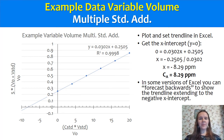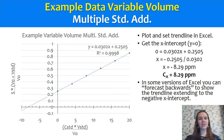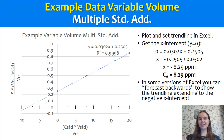So for variable volume standard additions, that x-intercept is the actual analyte concentration in your original 5 mils of sample — 8.29 ppm in this case. It turns out the estimate of 10 ppm was not too bad based on our prior knowledge.